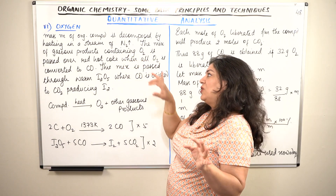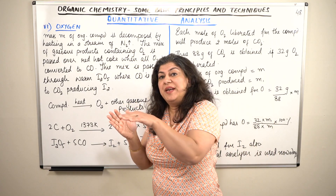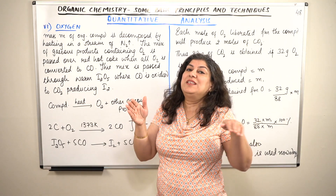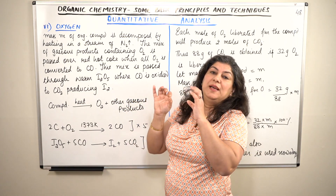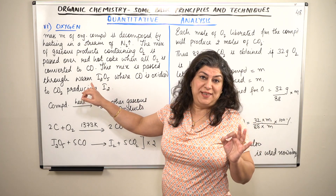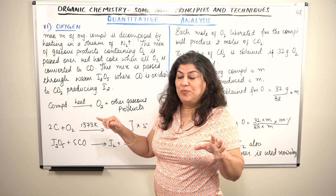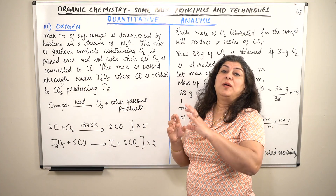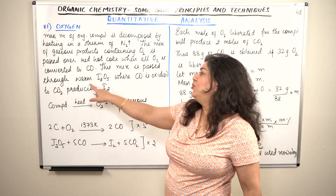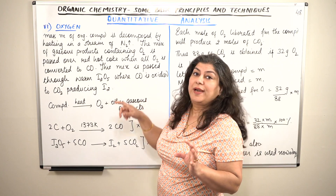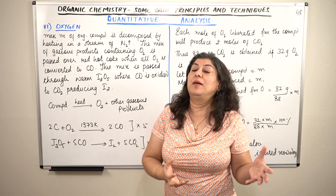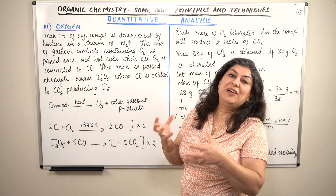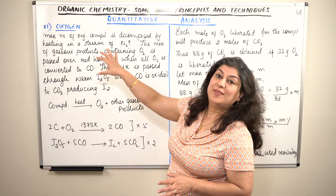These gaseous products are passed over red hot coke, which is carbon. When the oxygen-containing gases pass over red hot coke, the carbon gets oxidized, resulting in the formation of carbon monoxide (CO). This carbon monoxide is then passed through warm iodine pentoxide (I₂O₅), where carbon monoxide gets converted into carbon dioxide. From the amount of carbon dioxide produced, we can find out the amount of oxygen present in the compound.